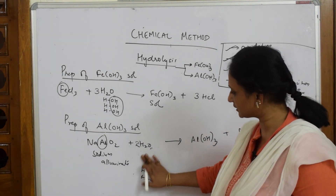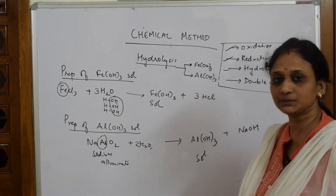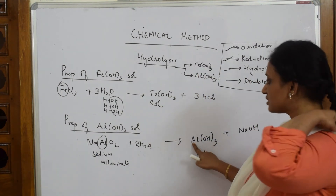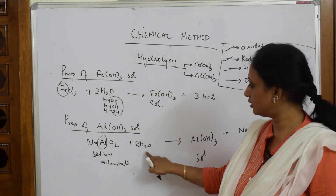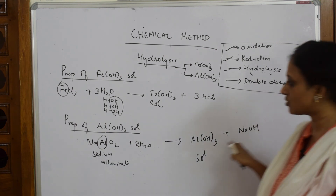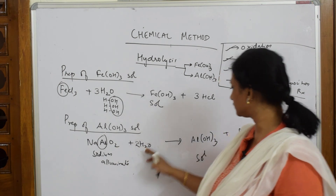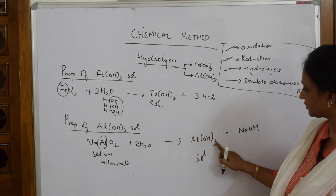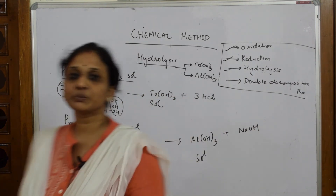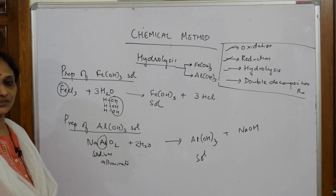Let us see whether we have balanced the reaction. Sodium: 1 on each side — done. Aluminium: 1 on each side — done. Hydrogen: 2 plus 2 is 4 on the left; 3 plus 1 is 4 on the right — done. Oxygen: 2 plus 2 is 4 on the left; 3 plus 1 is 4 on the right — done. So we have prepared the lyophobic salts using the hydrolysis reaction.